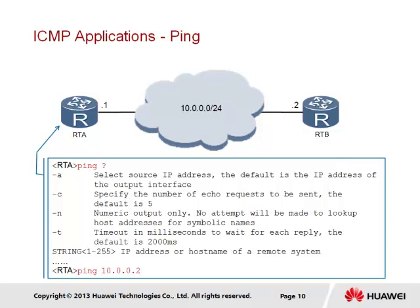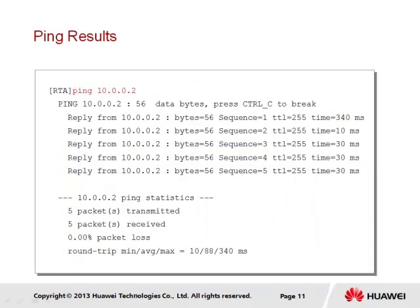We demonstrate the result of generating ICMP echo requests through the ping application. Based on the diagram, we generate a request from RTA to the destination RTB with the address of 10.0.0.2. As a result, five ICMP echo request messages were generated, to which five ICMP echo reply messages were returned — all successful. Additional information displayed includes the number of bytes transmitted, the TTL value, transmission time from the IP header, and a sequence number used to differentiate the various ICMP echo messages that were originally sent.